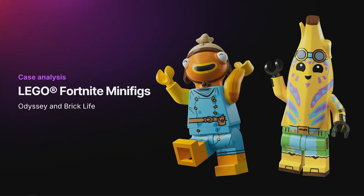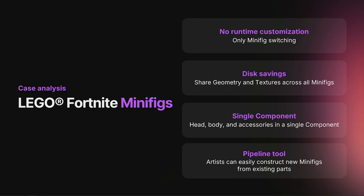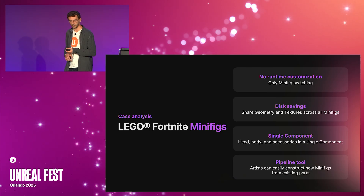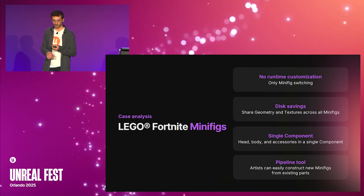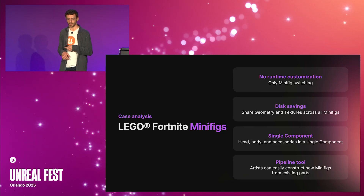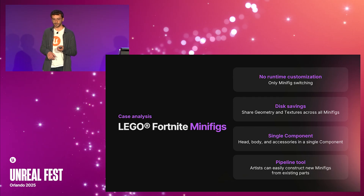Moving on: LEGO Fortnite minifigs. Unlike both previous examples, LEGO minifigs do not offer any kind of customization — players can only switch between minifigs. In this use case, Mutable is being used primarily for disk savings. Minifigs are stored disassembled, like LEGO pieces, and then reassembled at runtime, allowing you to reuse many assets between them. Since they are assembled at runtime, Mutable merges the result into a single skeletal mesh component.